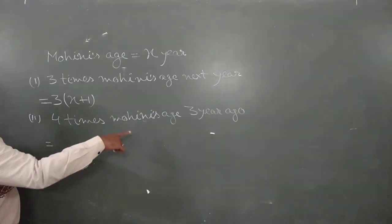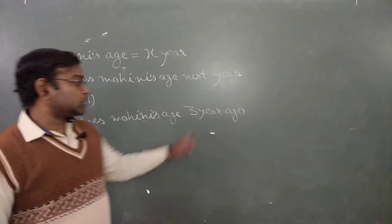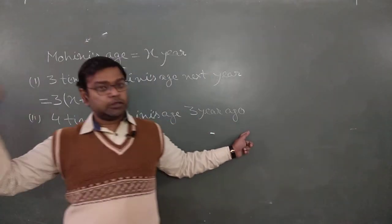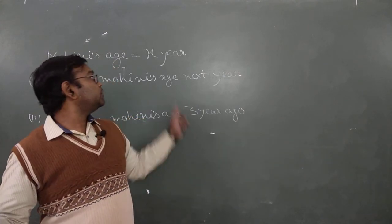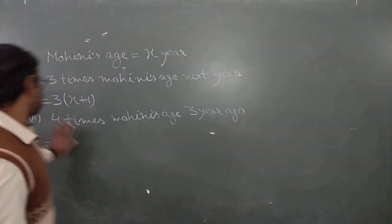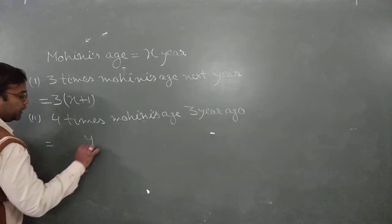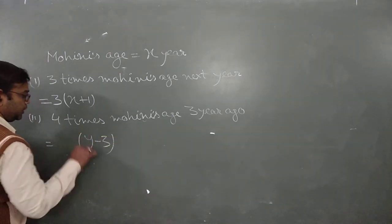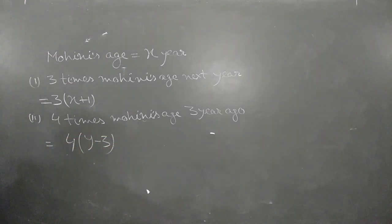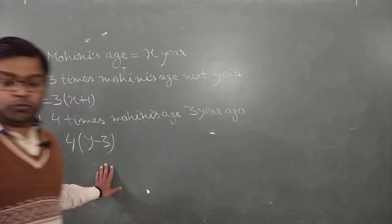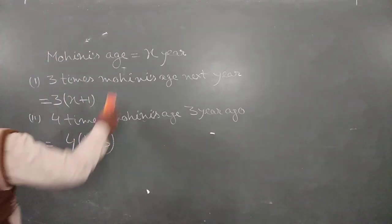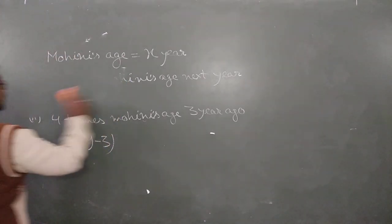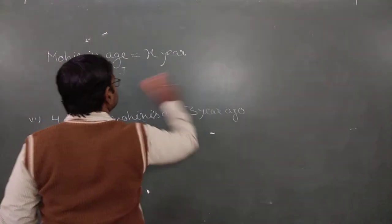Four times Mohini's age three years ago: three years ago means we subtract 3 from the present age, so it's (Y minus 3) into 4, which is 4(Y-3).